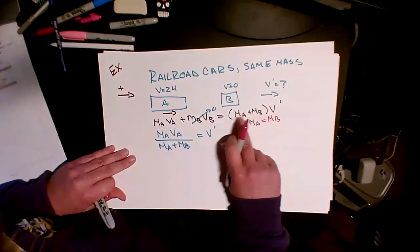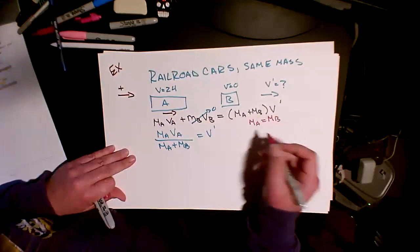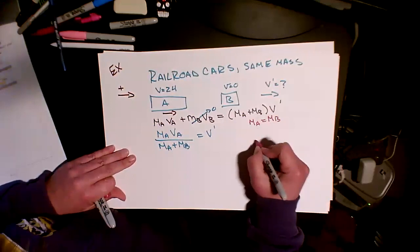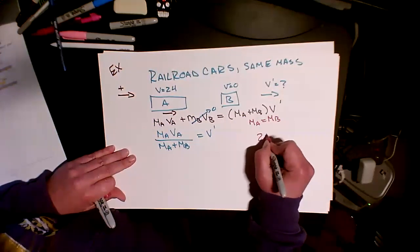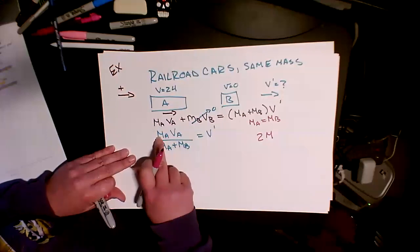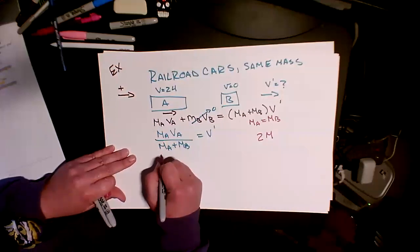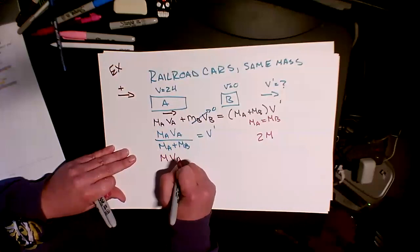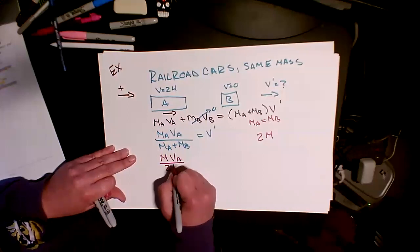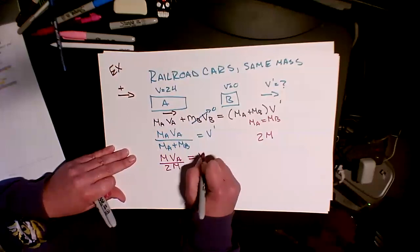And what I really have here is mass A plus mass A, or just mass plus mass. So this side of the equation would become 2m, this side would become 1m. So I have mass times VA divided by two times mass equals V prime.